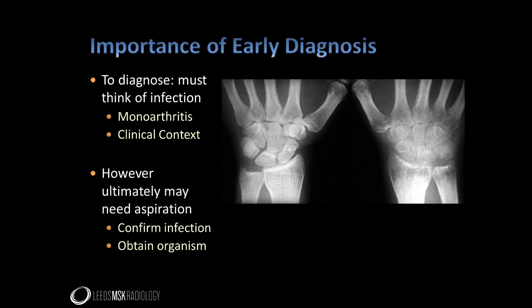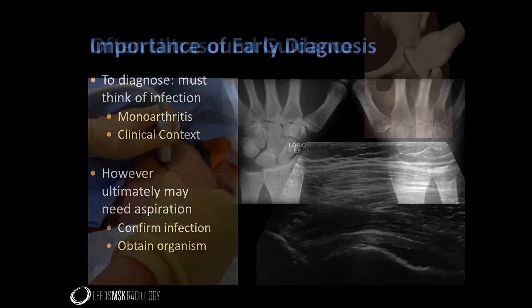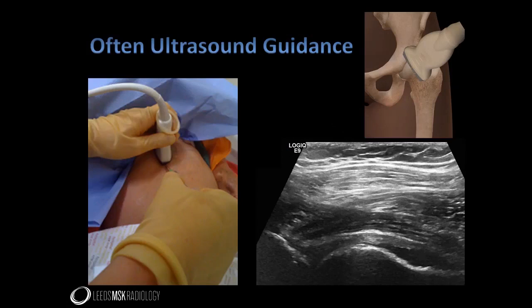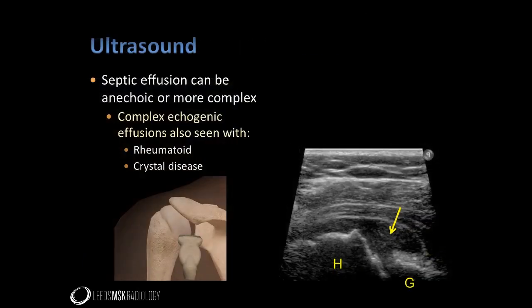Ultimately, aspiration of the suspected joint will often be needed to confirm the diagnosis. Even when the diagnosis is apparent, aspiration will commonly be required to obtain an organism to guide treatment. In my practice, ultrasound is most frequently used to guide aspiration, as in this case of hip sepsis. On this longitudinal ultrasound of an infected hip, we can appreciate the acetabulum, femoral head, and the effusion to be aspirated. It is important to realise that the ultrasound appearances of a joint effusion cannot be relied on to distinguish joint infection from a sterile effusion. An infected joint effusion can have a complex echogenic appearance, as seen here showing the posterior aspect of the glenohumeral joint.